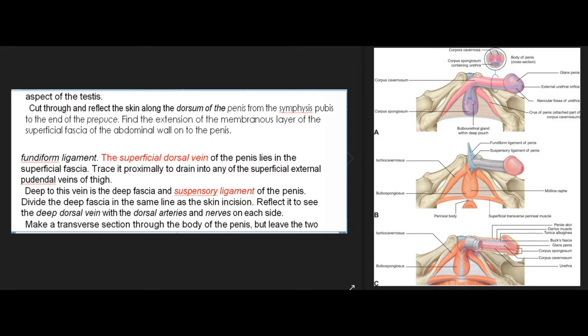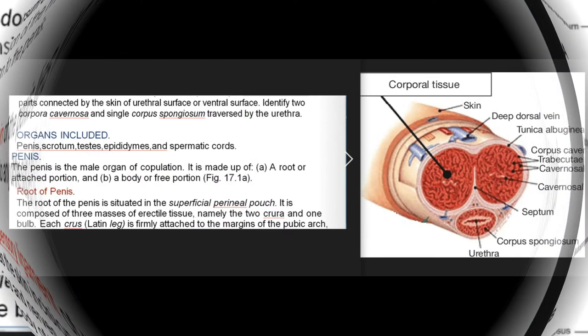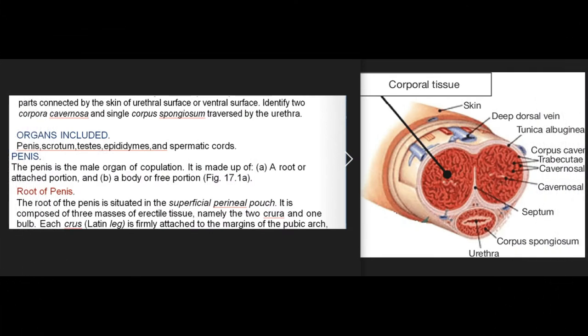Cut through and reflect the skin along the dorsum of the penis from the symphysis pubis to the end of the prepuce. Find the extension of the membranous layer of the superficial fascia of the abdominal wall onto the penis — the fundiform ligament. The superficial dorsal vein of the penis lies in the superficial fascia. Trace it proximally to drain into any of the superficial external pudendal veins of the thigh. Deep to this vein is the deep fascia and suspensory ligament of the penis. Divide the deep fascia in the same line as the skin incision. Reflect it to see the deep dorsal vein with the dorsal arteries and nerves on each side. Make a transverse section through the body of the penis, but leave the two parts connected by the skin of the urethral or ventral surface. Identify the two corpora cavernosa and single corpus spongiosum traversed by the urethra.